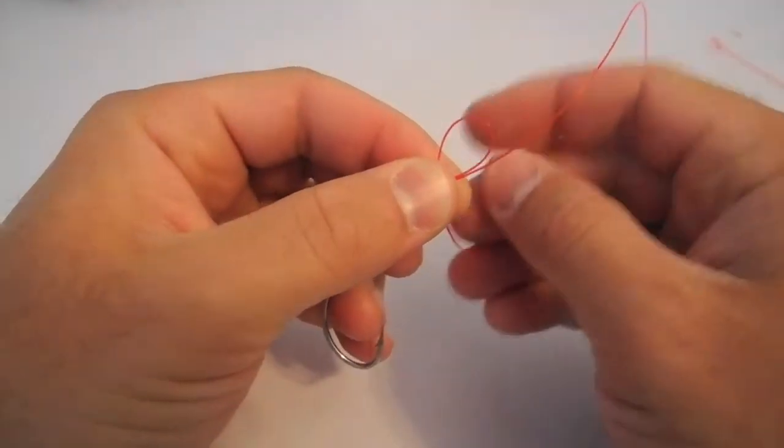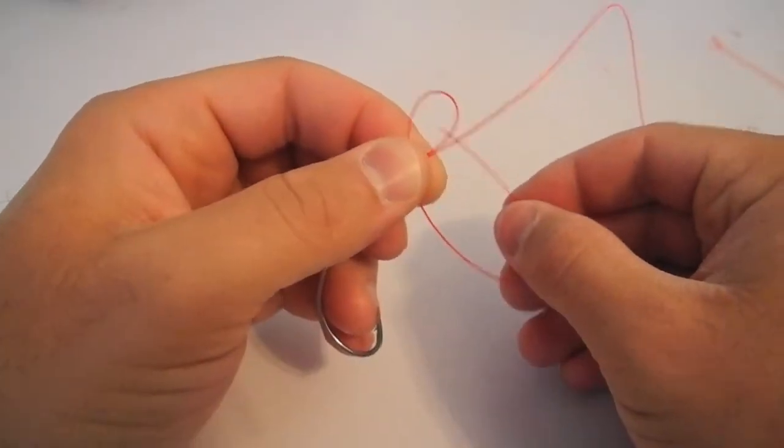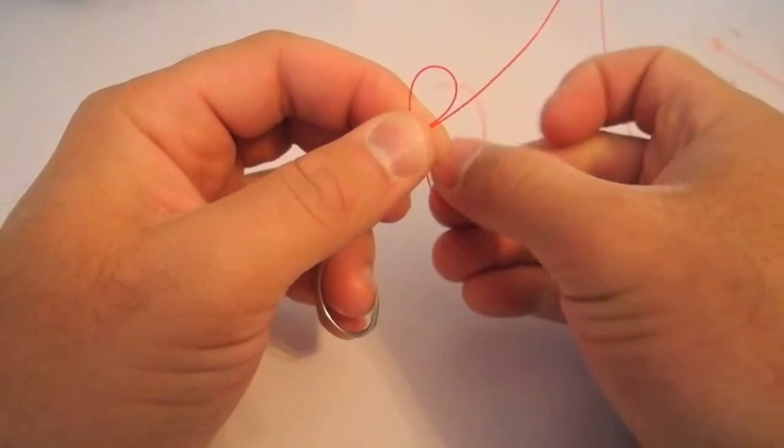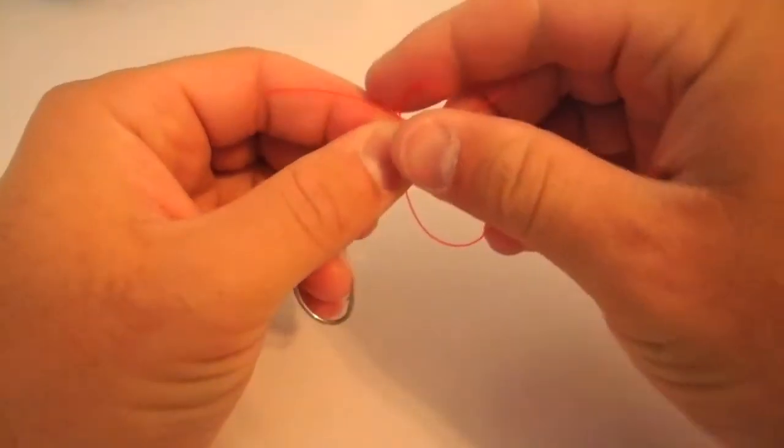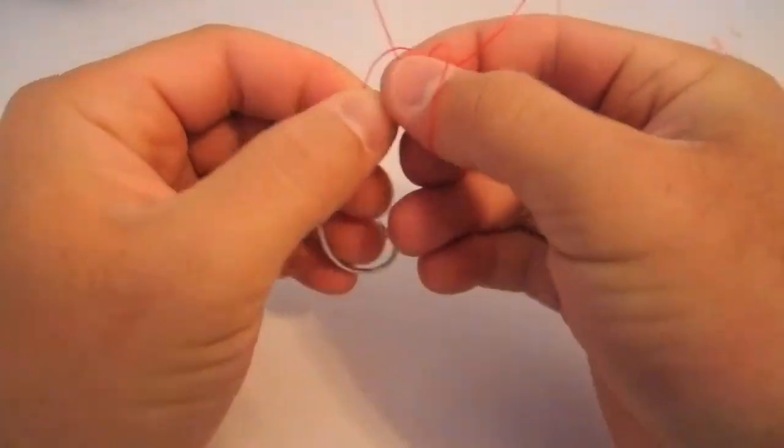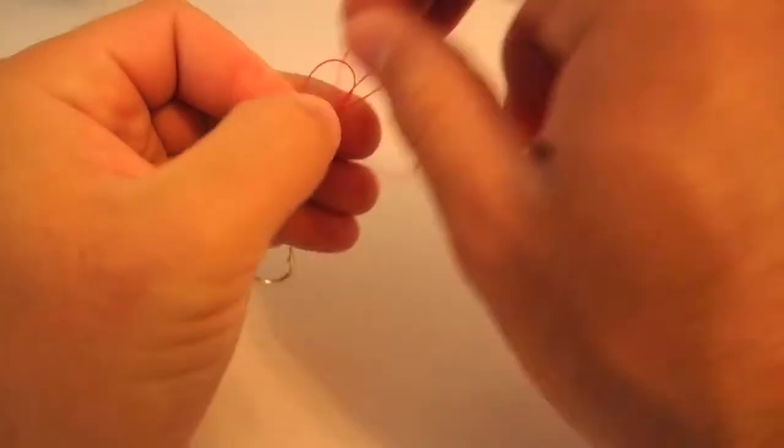Now what I'm going to do is take that tag end and go through that loop around the standing line and through that loop roughly four times or so. So there's once, and you can just let go once you get it going.